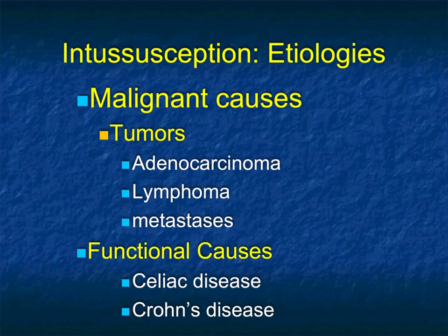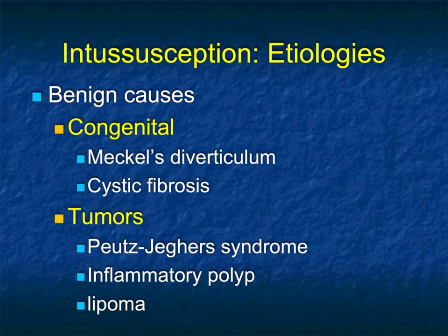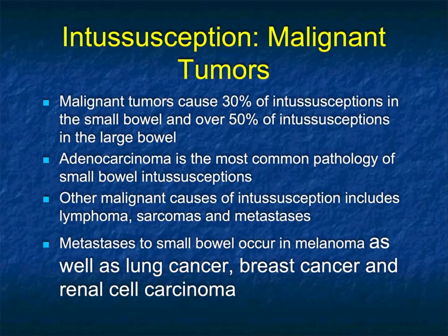Intussusception can be due to functional causes like celiac disease or Crohn's disease. Benign causes include Meckel's or cystic fibrosis, and tumors in Peutz-Jeghers, inflammatory polyps, or lipomas are all things that can cause intussusception. Statistically, malignant tumors cause 30% of intussusceptions in the small bowel and over 50% in the large bowel, with adenocarcinoma being the most common pathology of small bowel intussusceptions, though metastasis is increasing in numbers.